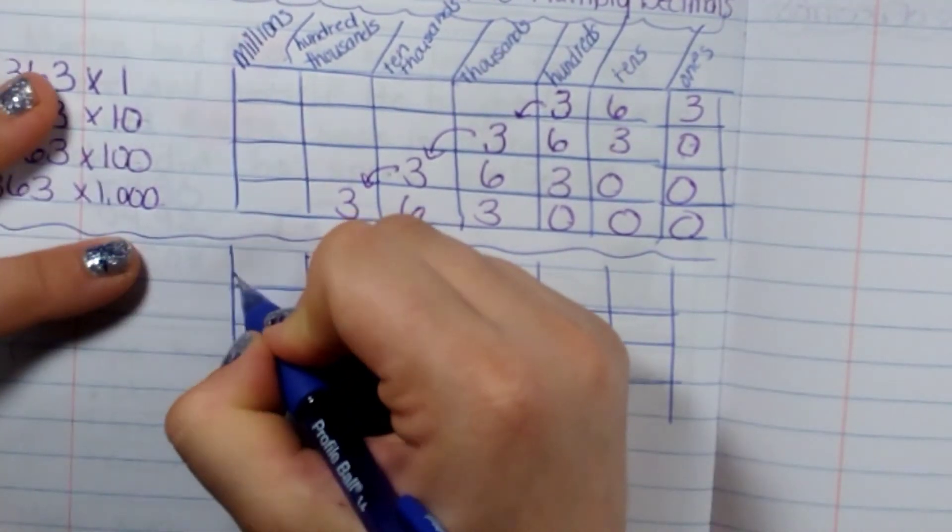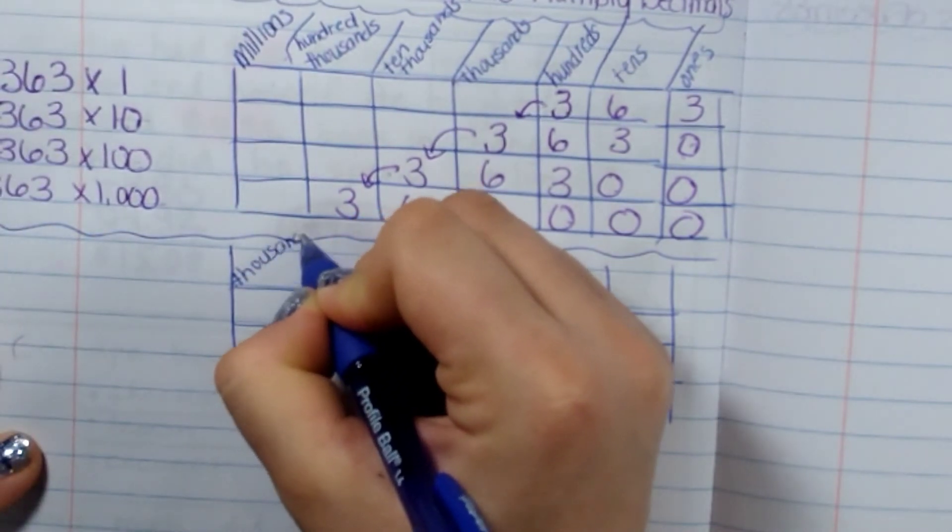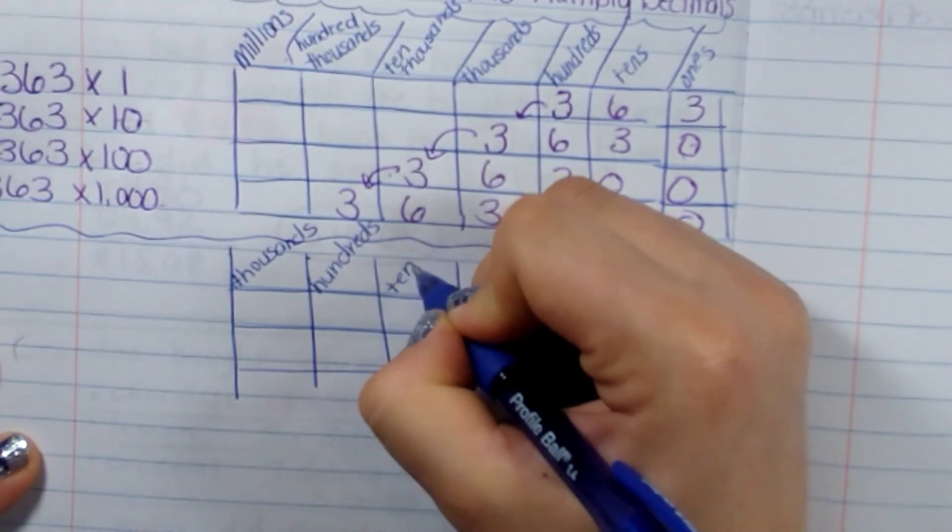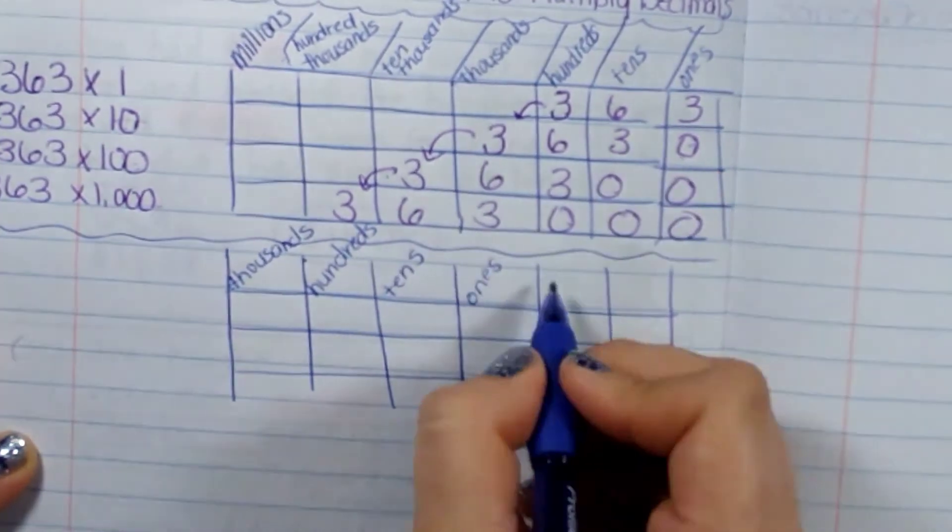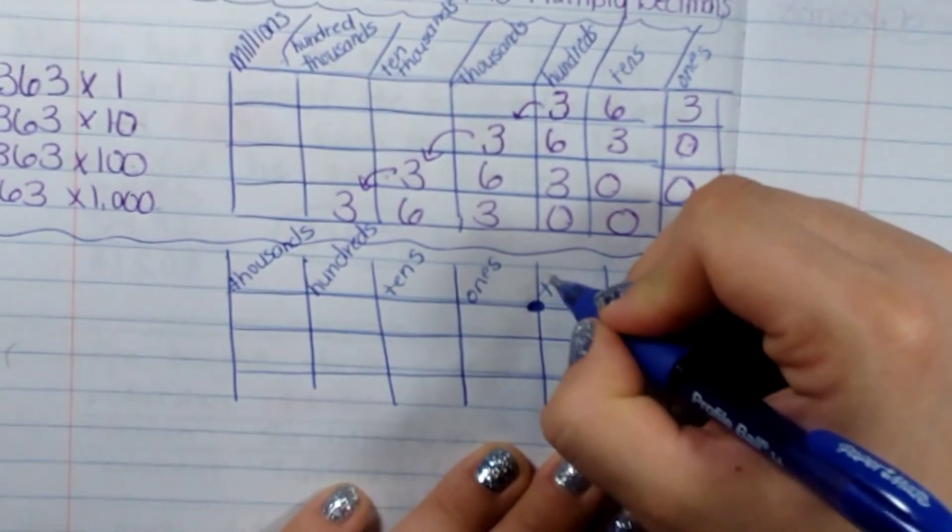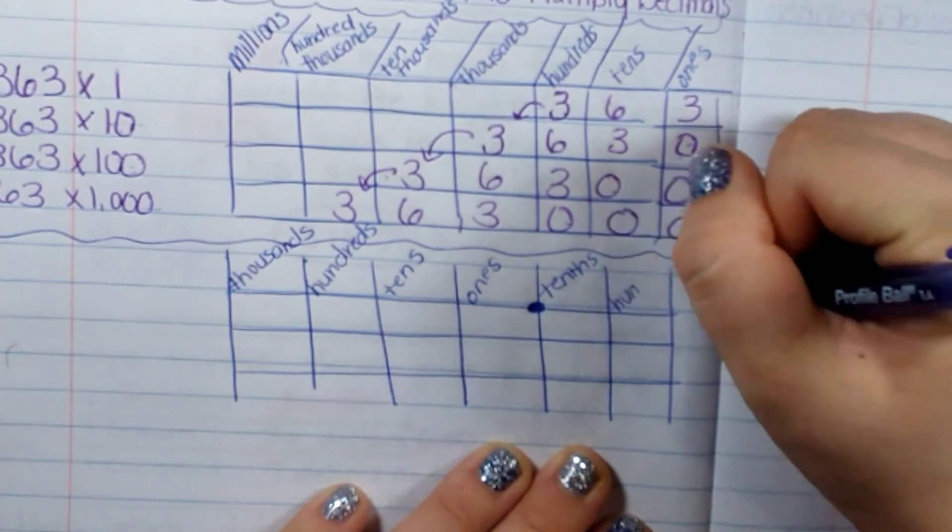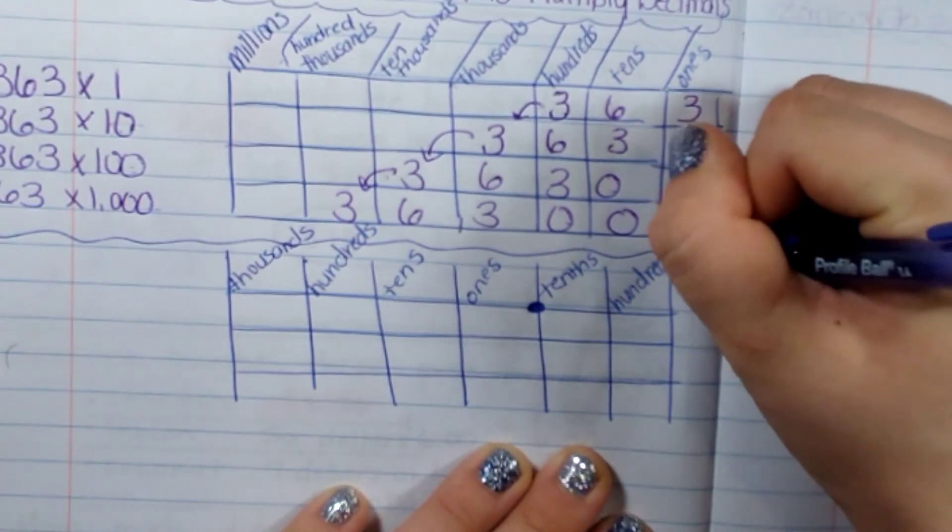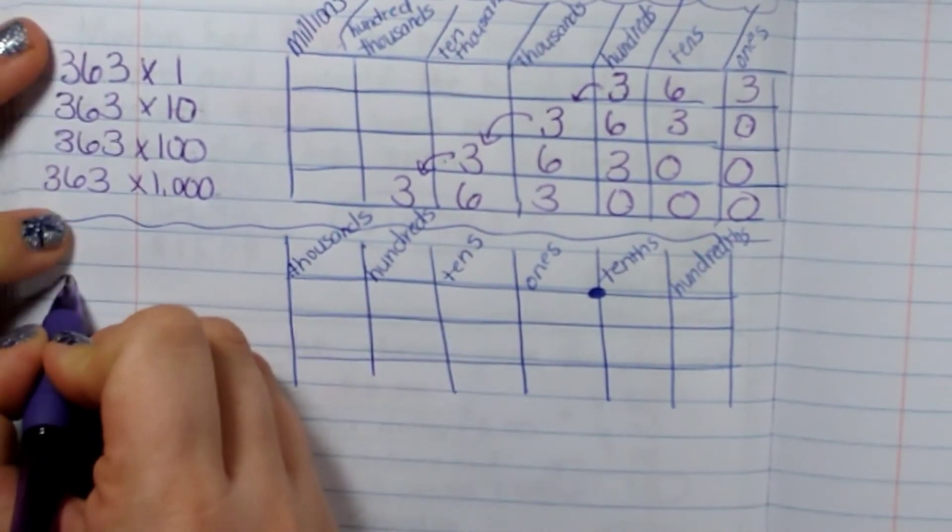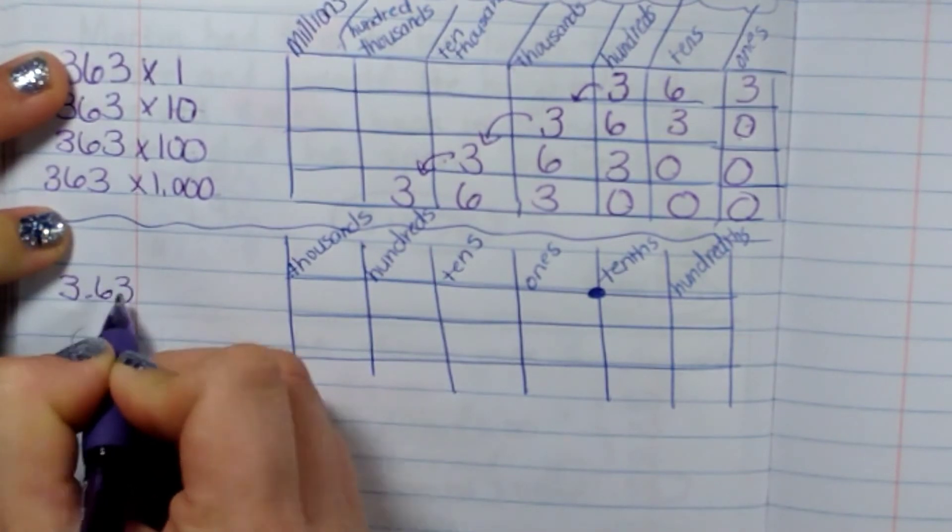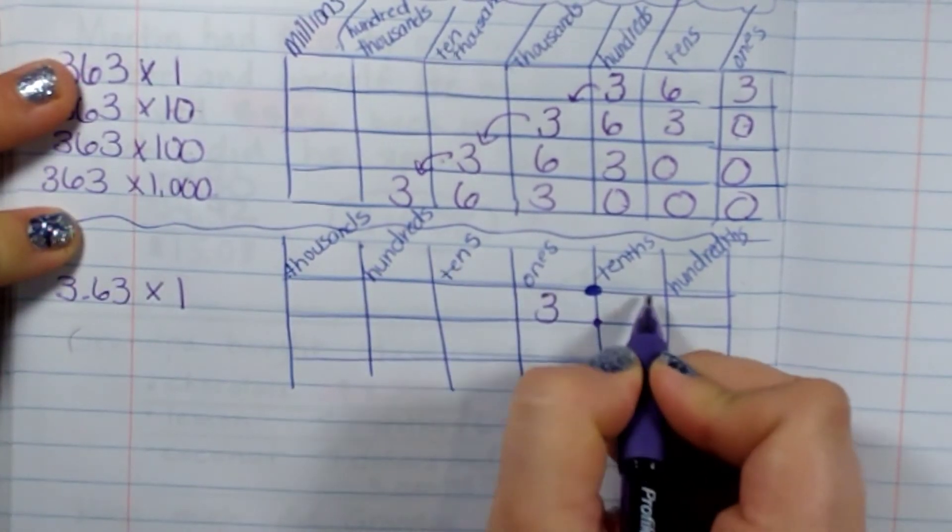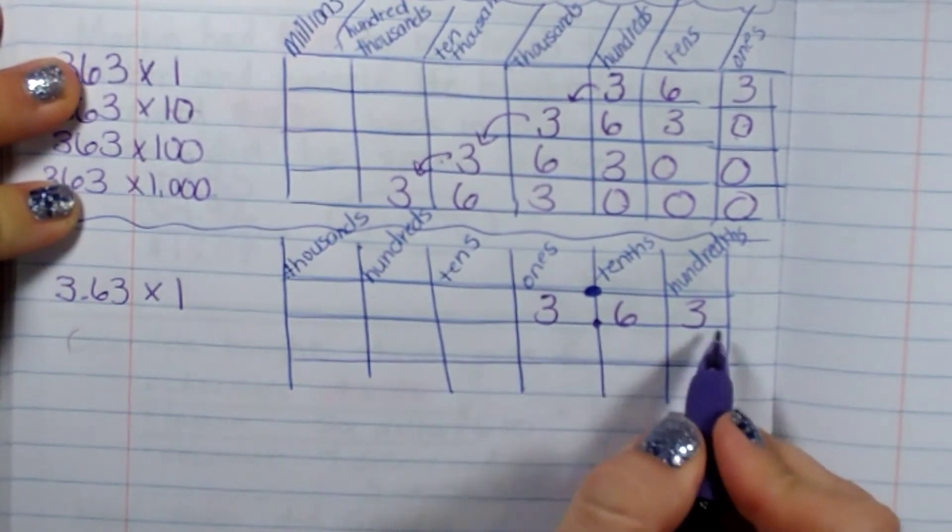So this will be thousands. This is hundreds. This is the tens place. This is the ones place. This is the decimal point. We have the tenths and the hundredths. And if we were going to go over here, it would be the thousandths. If I was to write three and sixty-three hundredths times one, it's going to be written like this. Three and sixty-three hundredths.